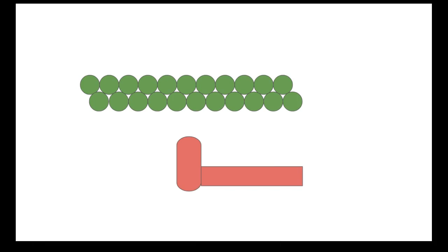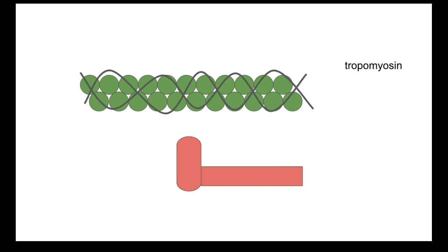These two structures — there are also a few other things connected to the actin. The first thing that we have is called tropomyosin, and we also have these little connections on the tropomyosin.